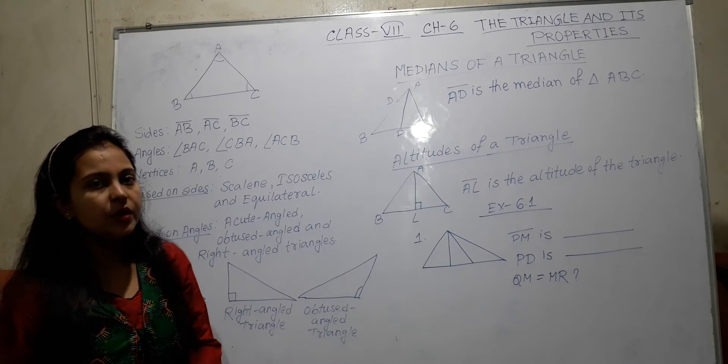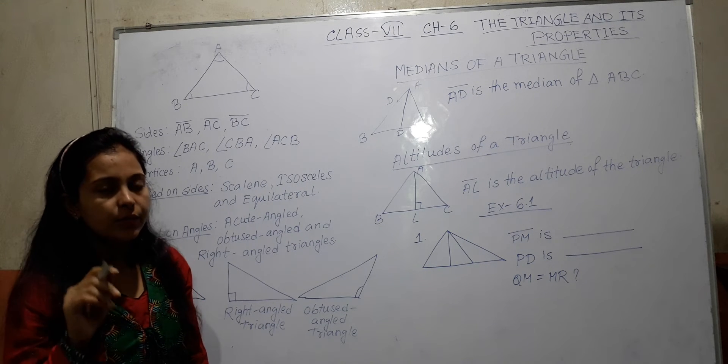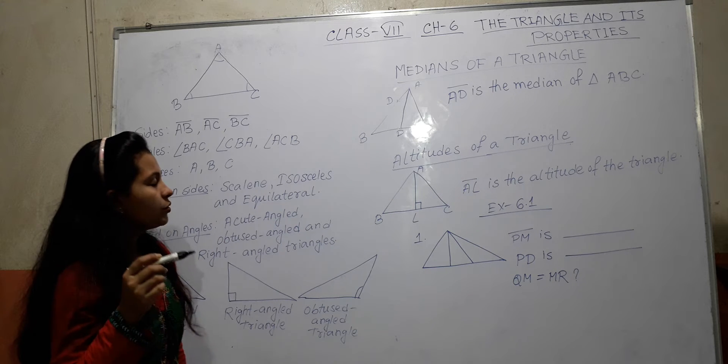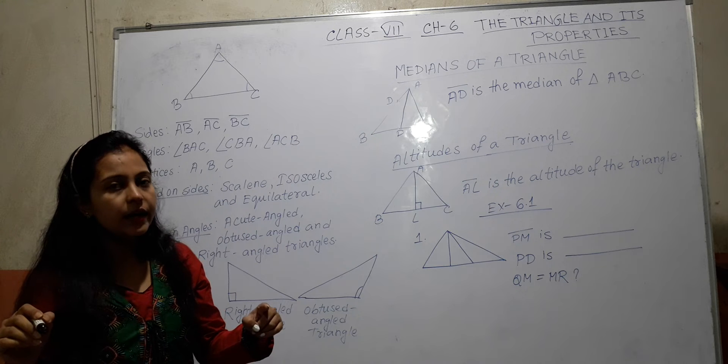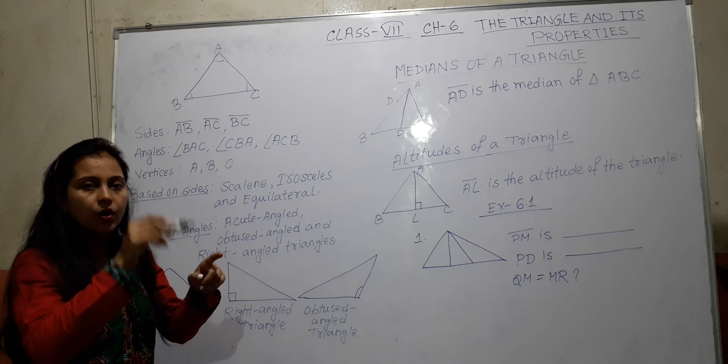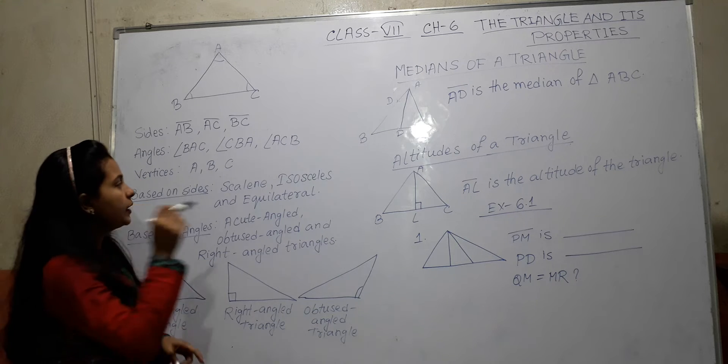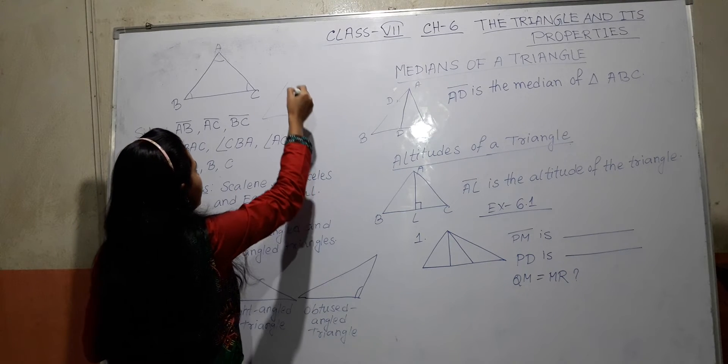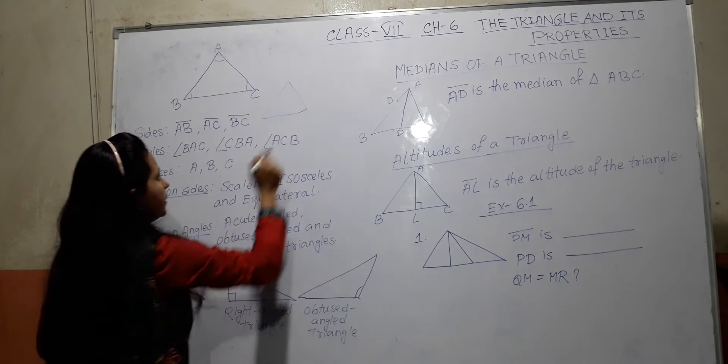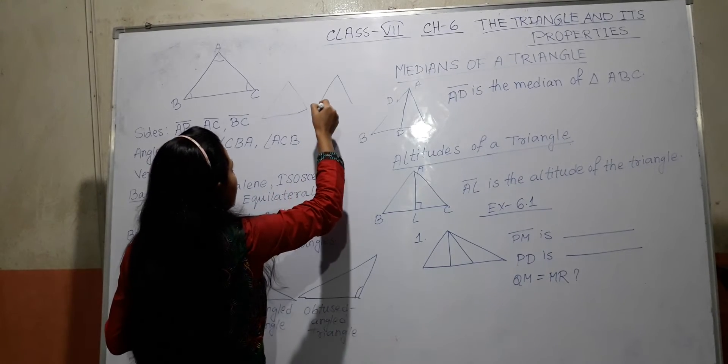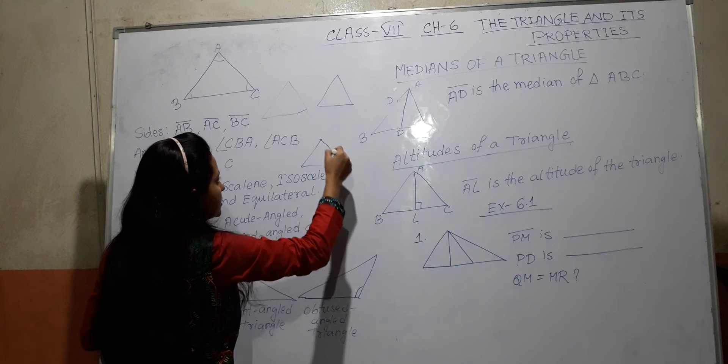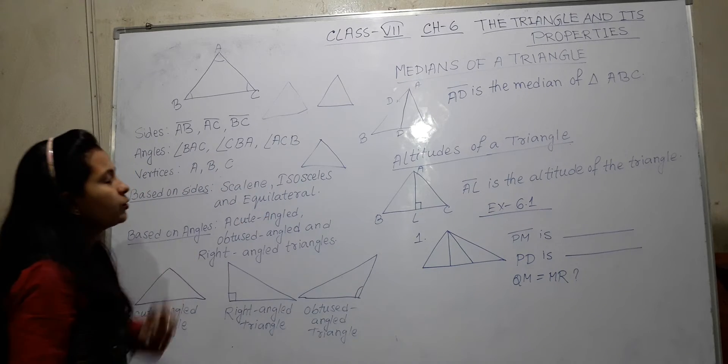Scalene triangle means whose sides are different in length. Isosceles triangle means whose two sides are equal in length. Equilateral triangle means whose all three sides are equal in length. All are different, this is called scalene. Two same and another one different, this is called isosceles. And if 3 is same length, this is called equilateral.